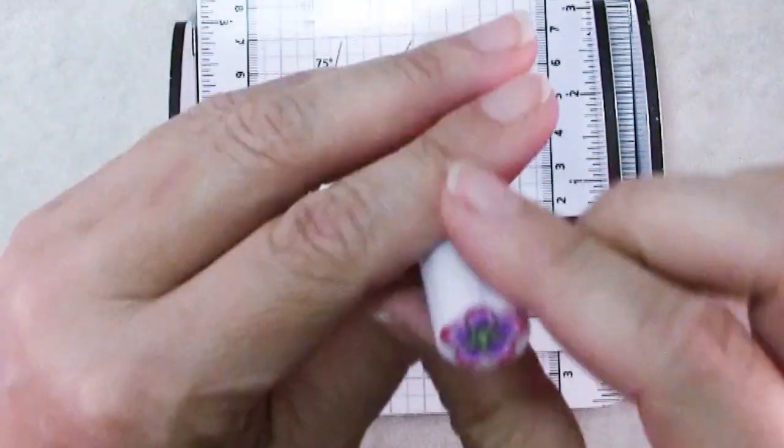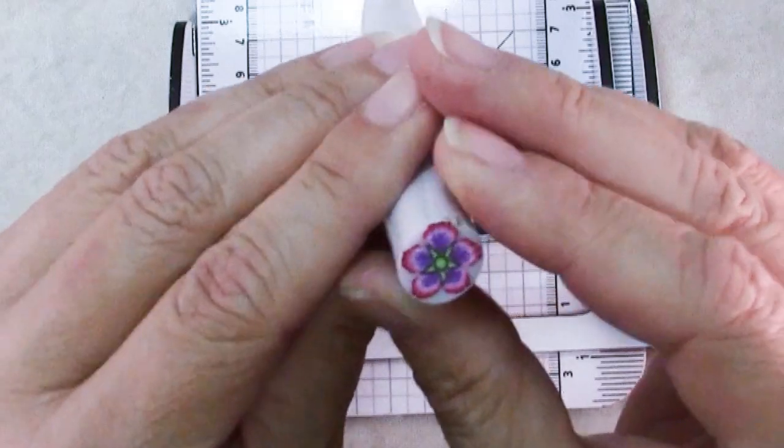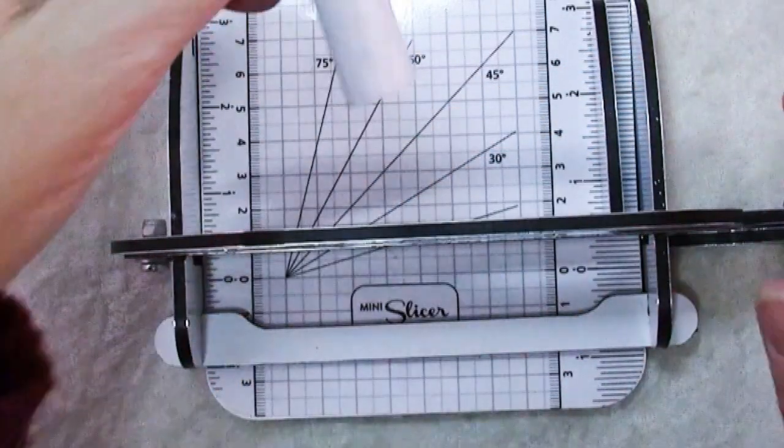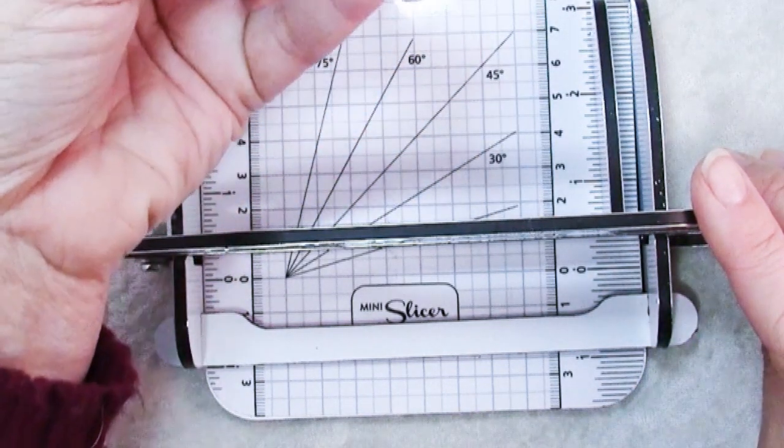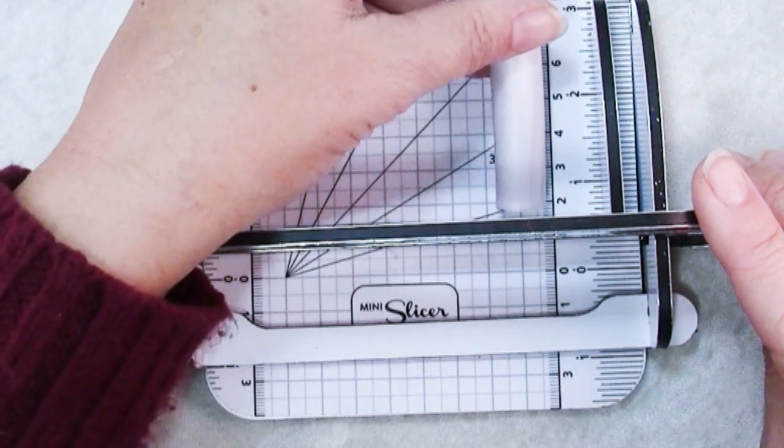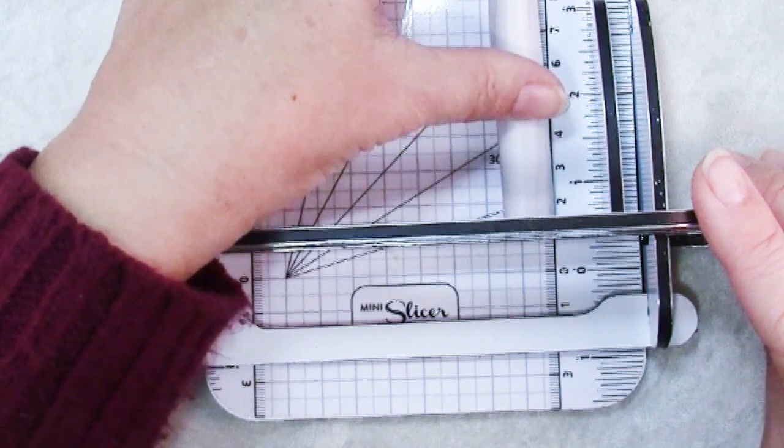This was sliced on the slicer, so I know this is a nice, neat cut edge and I hate always wasting some at the beginning or the end, so this is kind of my workaround. I'm going to take my cane, I'm going to press it up against that blade.